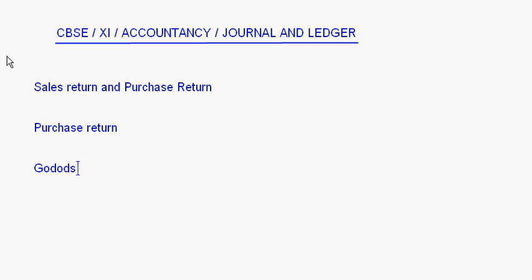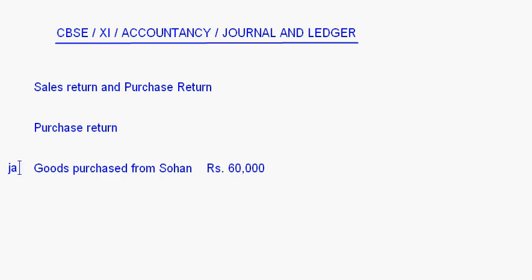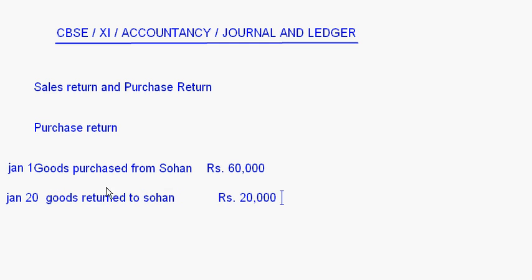Let's say goods were purchased from Sohan for rupees 60,000 on January 1st. Then on January 20th, we have a transaction: goods returned to Sohan, rupees 20,000. This means out of the 60,000 rupees purchased, 20,000 rupees worth of goods have been returned to the supplier Sohan. Now let's make the journal entries for these two transactions.